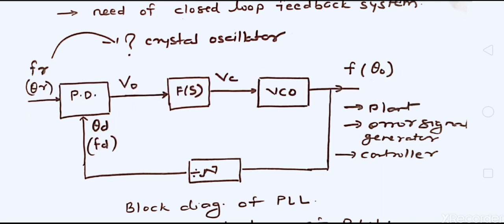The VCO produces a very high frequency value; you cannot directly compare it with FR, which is the reference frequency generated from a crystal oscillator, generally in the megahertz range. That's why you need to divide and scale down the VCO output so you can compare FR and FD. The phase detector produces an output directly proportional to the difference between FR and FD. The low-pass filter or integrator integrates this output over time and manipulates the VCO.